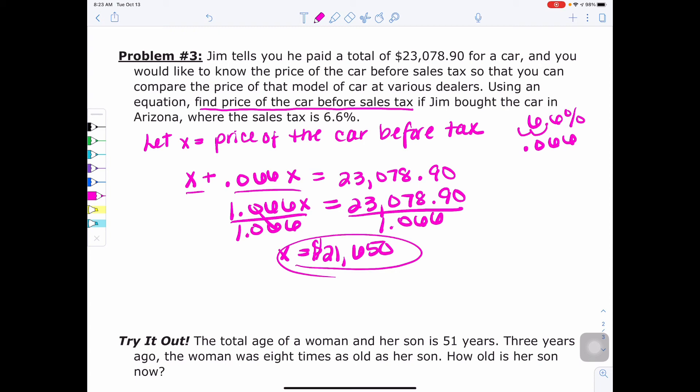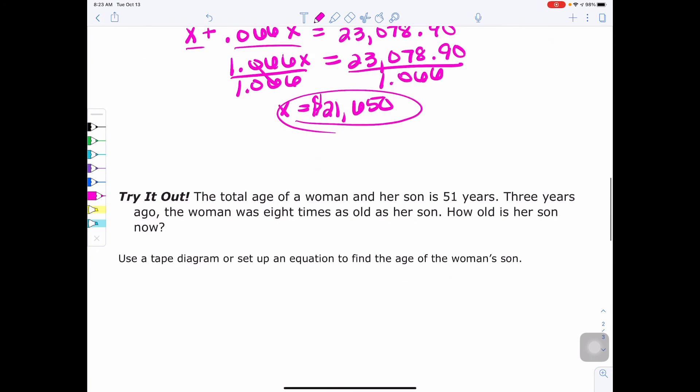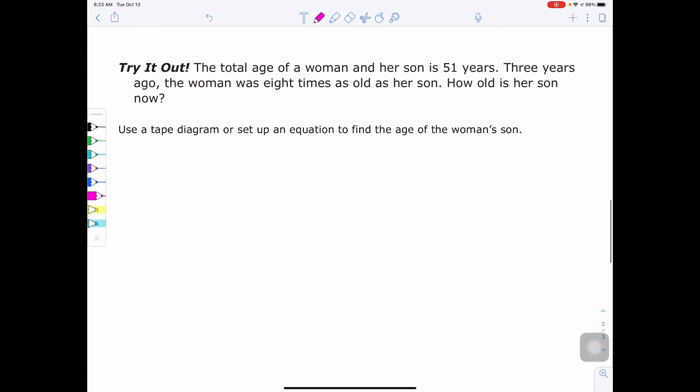So lastly, I would like you to try out the total age problem. Now, this can be a challenge. So you do the best you can, try it on your own, and then when you're ready, you can resume the video to find out the answer. The total age of a woman and her son is 51 years. Three years ago, the woman was eight times as old as her son. How old is her son now? So you could use a tape diagram or set up an equation to figure this out.